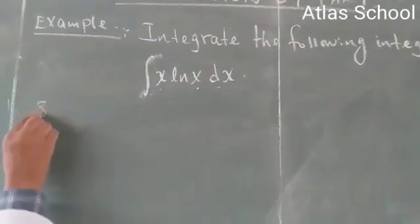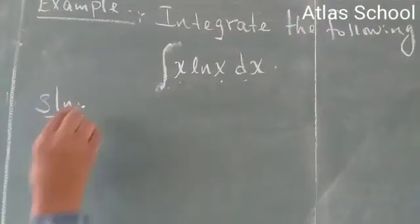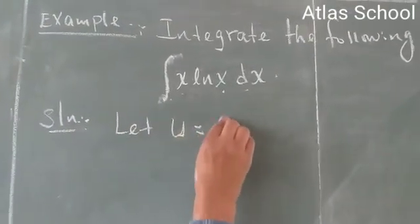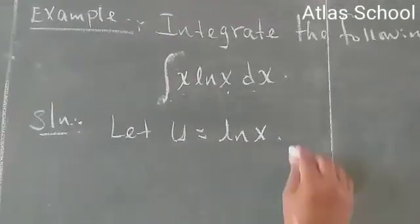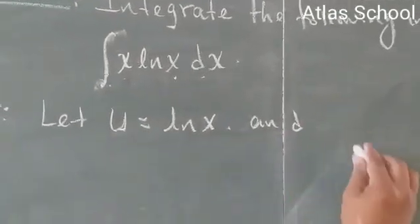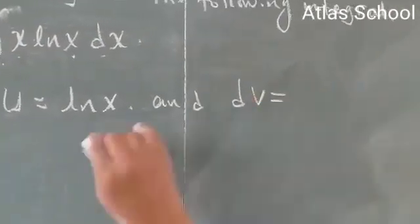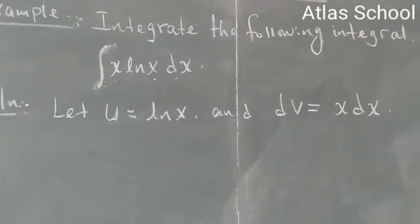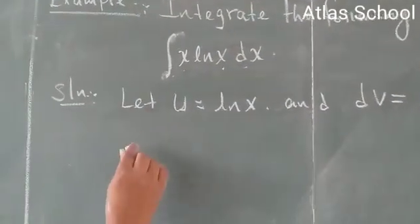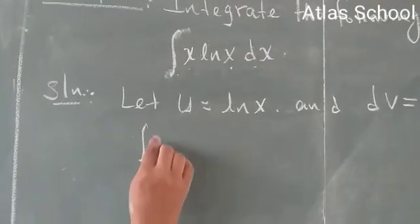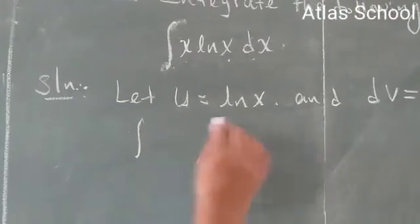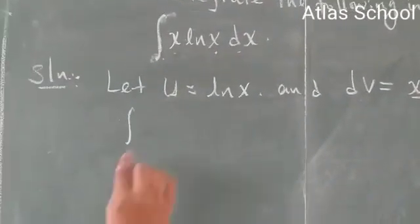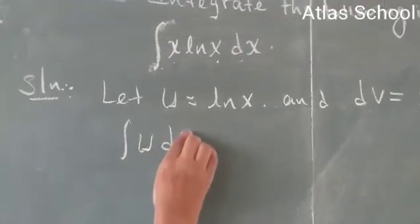Now to solve this one let's see first. Let's say u is equal to ln x and dv is equal to x dx. Now the integral becomes, instead of dv we replace x dx which becomes u dv.